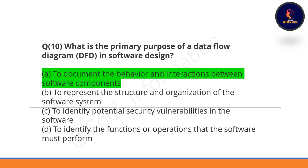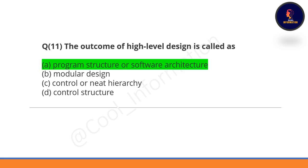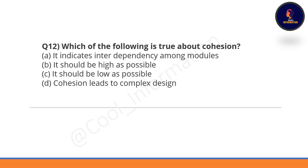Make sure to watch the three previous videos and this video as well. Question 11: The outcome of high-level design is called program structure or software architecture — Option A is correct. Question 12: Which of the following is true about cohesion? Cohesion should be as high as possible — Option B is correct.